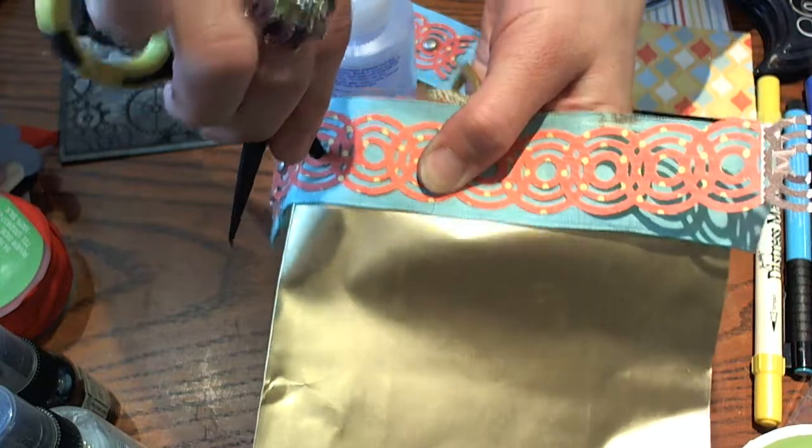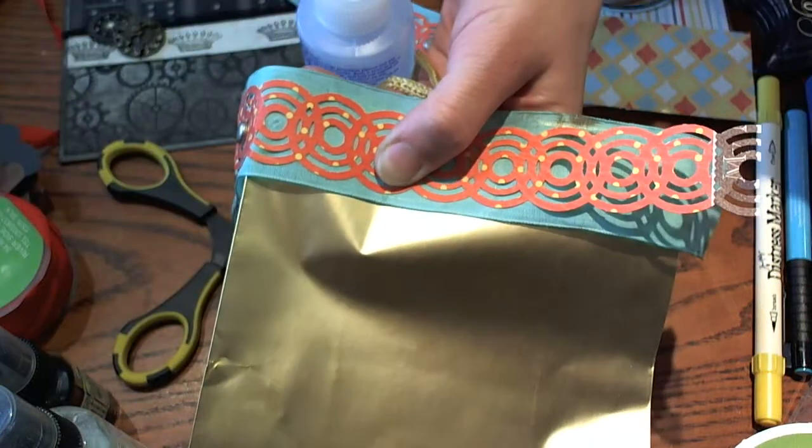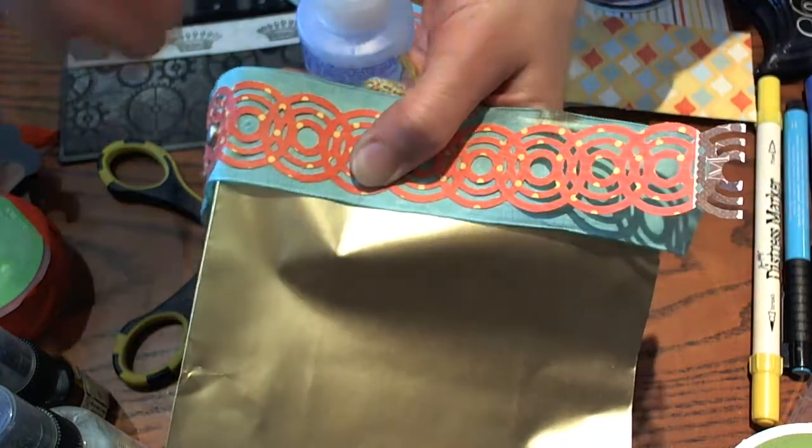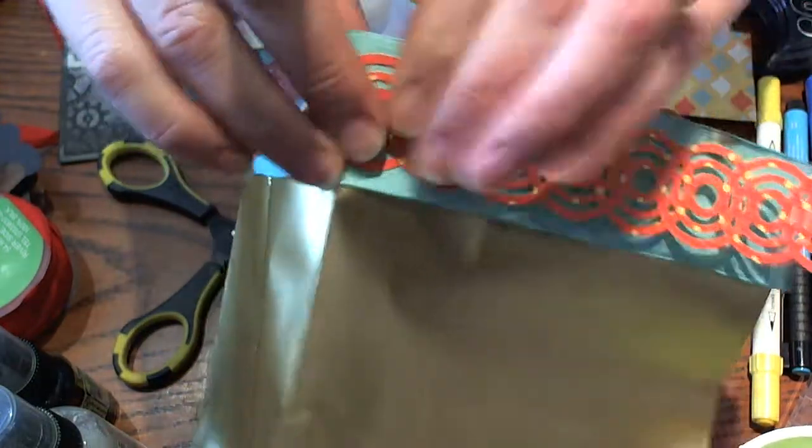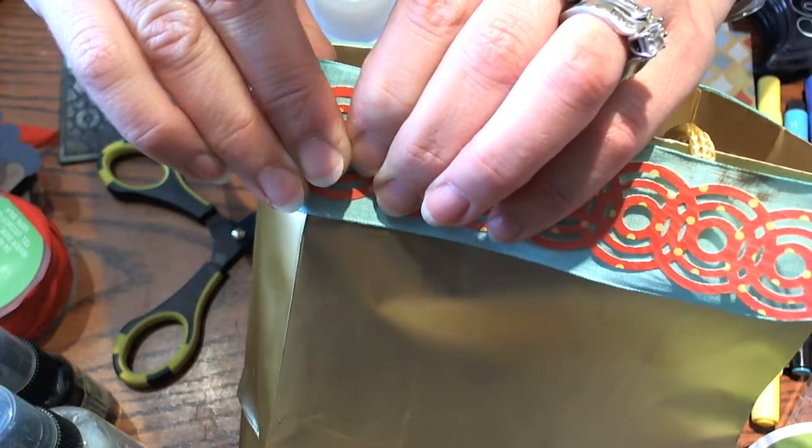You're just going to take your tool and poke right through the ribbon. You could glue this if you wanted to, too. But I actually liked the 3D effect that the brads give the trim.